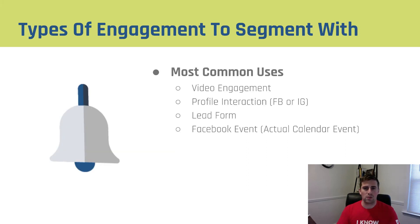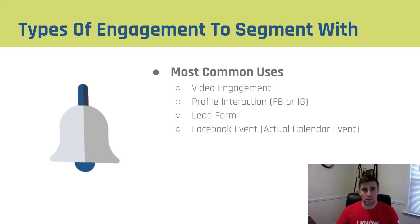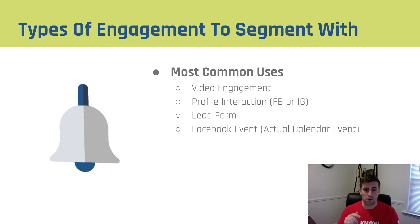A couple of ways we can actually segment our engagement: video engagement, profile interaction on Facebook or Instagram, opening a lead form — either opening, opening and submitting, or opening and not submitting — and finally, Facebook events. When I talk about events here, I'm talking about actual calendar events. So if you've got something coming up next week and people say they're interested in going, that's what you can use to segment your visitors based on engagement. Those are the most common uses — there are a couple others, but these are the four we stick to.